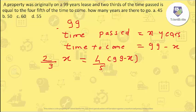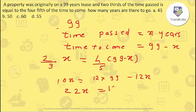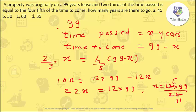Now just solve this equation. Cross-multiplying: 5 × 2 gives 10X on the left. On the right, 4 × 3 is 12, so we get 12 × 99 minus 12X. Bringing 12X to the left side makes it positive, so 22X = 12 × 99. Therefore X = (12 × 99) / 22. Simplifying: 6 × 9 gives X = 54 years.